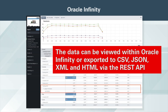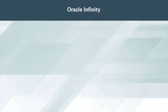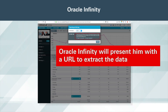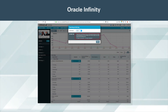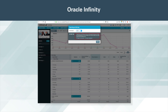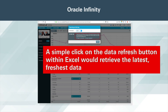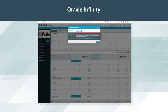The data can be viewed within Oracle Infinity, or exported to CSV, JSON, XML, and HTML via the REST API. Jeff exports the data in CSV format. Oracle Infinity will present him with a URL to extract the data, as well as some convenient options to either open the data in a new browser tab, or copy to the user's clipboard for use in an outside application such as Excel. The REST URL string holds meaningful query parameters, such as the time range of the report, the time zone of the user, and the export format. Jeff could, for example, use a relative date range — current month minus one for last month's data — and embed this connection within Excel. That way, a simple click on the data refresh button within Excel would retrieve the latest, freshest data. In fact, the data in the REST export may be no more than a few seconds old.